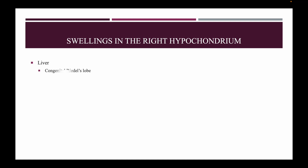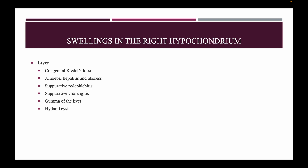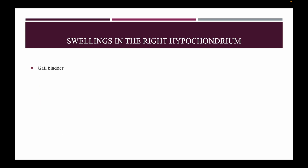Swellings in the right hypochondrium — in the liver: the congenital Riedel's lobe, amoebic hepatitis and abscess, suppurative pylephlebitis, suppurative cholangitis, gumma of the liver, hydatid cysts, carcinoma of liver, melanotic carcinoma of liver, and liver cirrhosis.